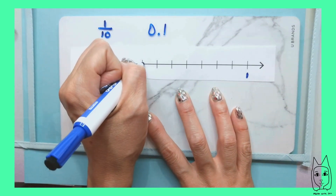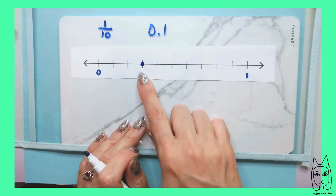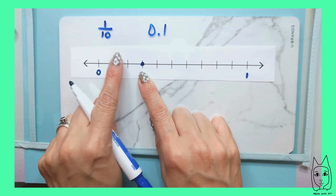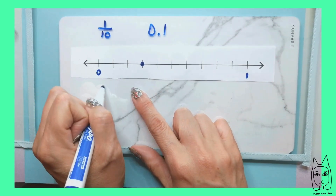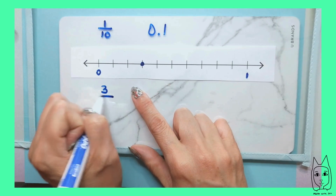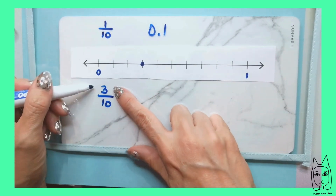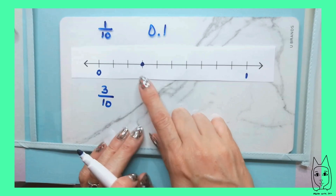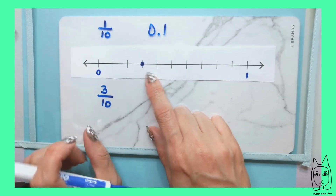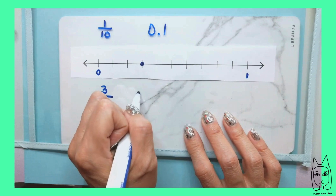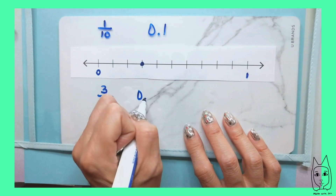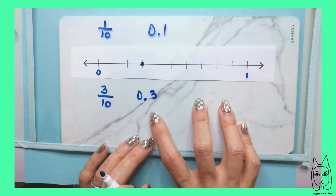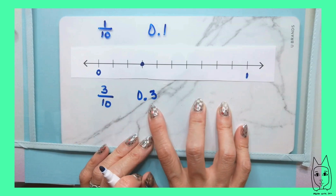If on my number line I have a dot that represents a value, I could count: one, two, three. I have three-tenths, because I have three equal parts out of those ten. Decimal-wise, I still have three-tenths, but now I'm going to go to the place value of tenths and put a three. So we have zero point three — three-tenths.